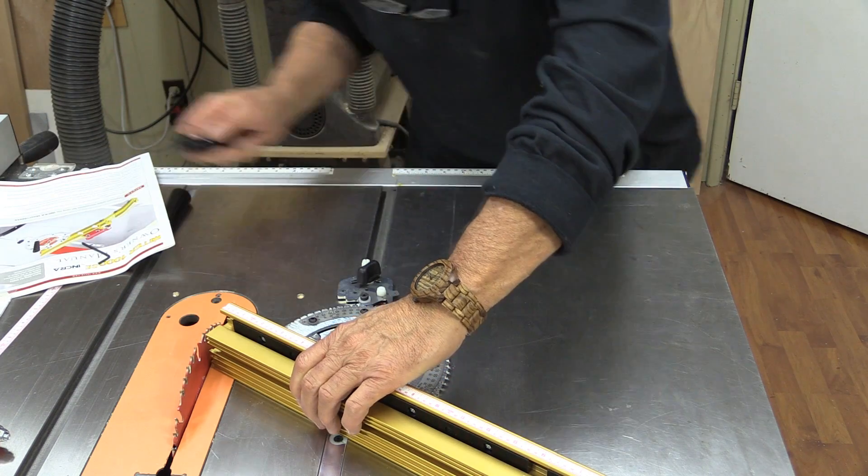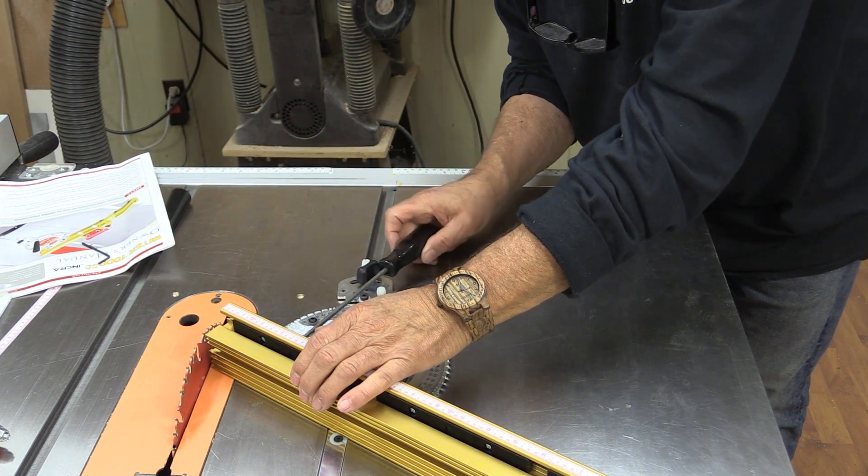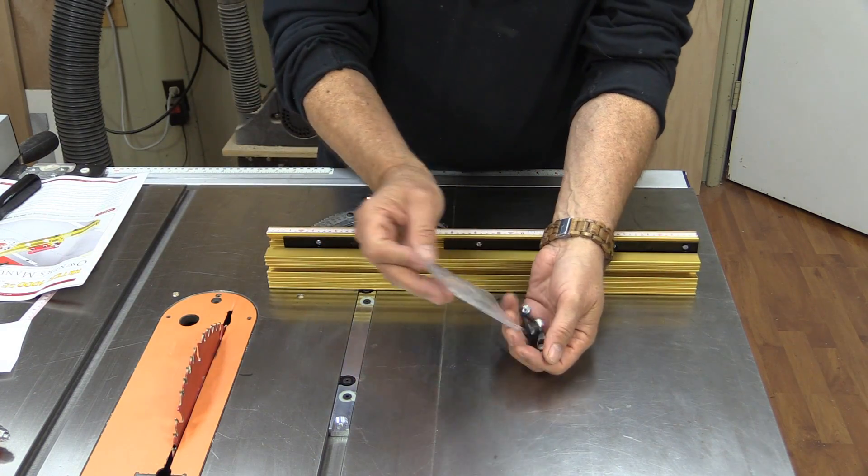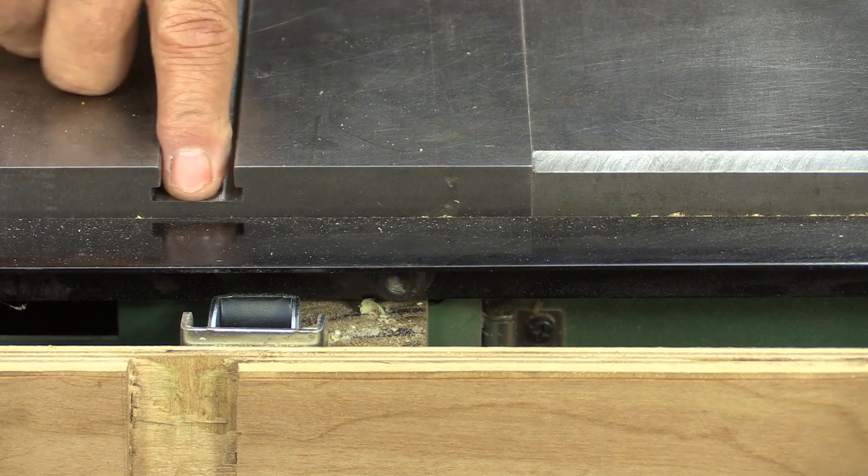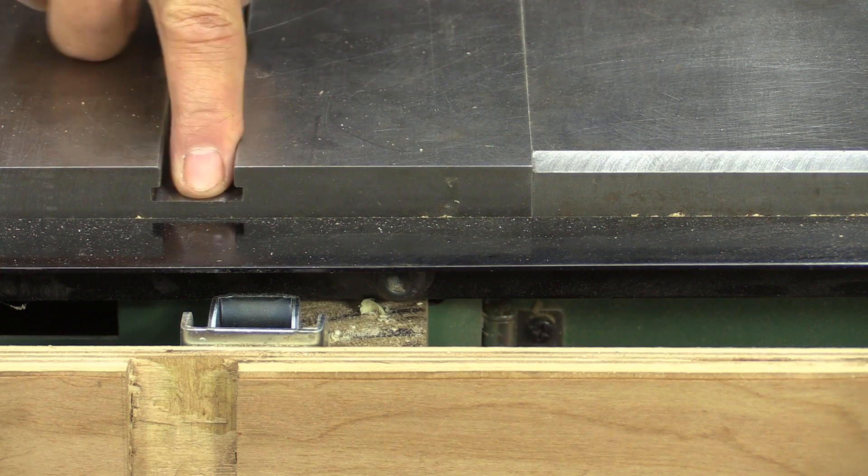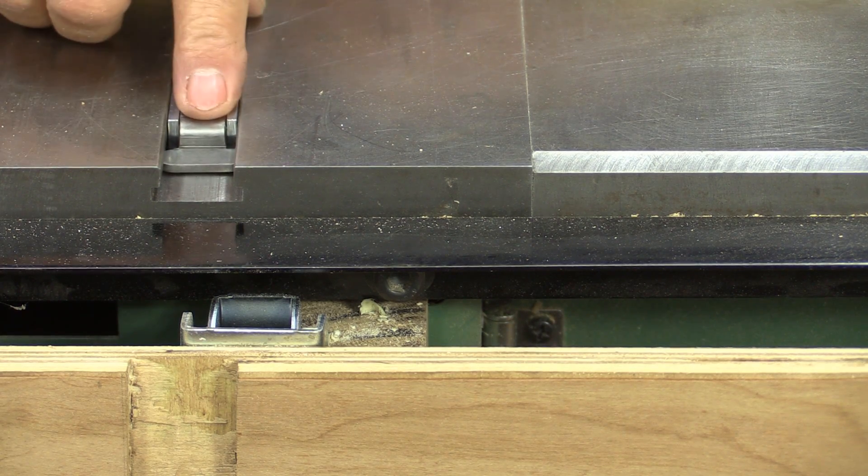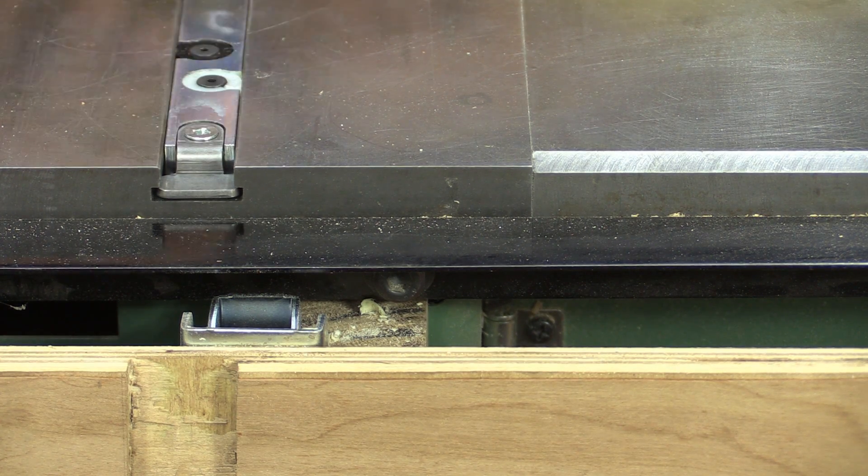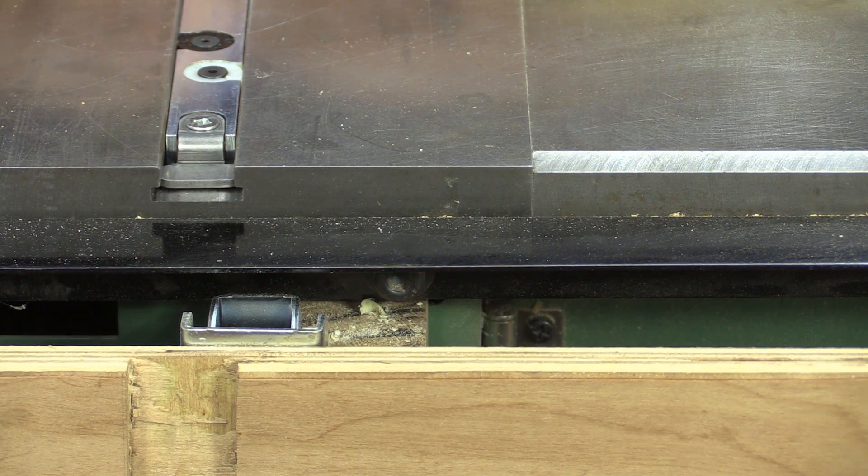There's the critical part right there and they give you this long screwdriver. One of the things they give you is one of these little T-mount clips. There's the very front of my miter slot with a little T-slot there. The purpose of this is so that the miter gauge can't flip up.